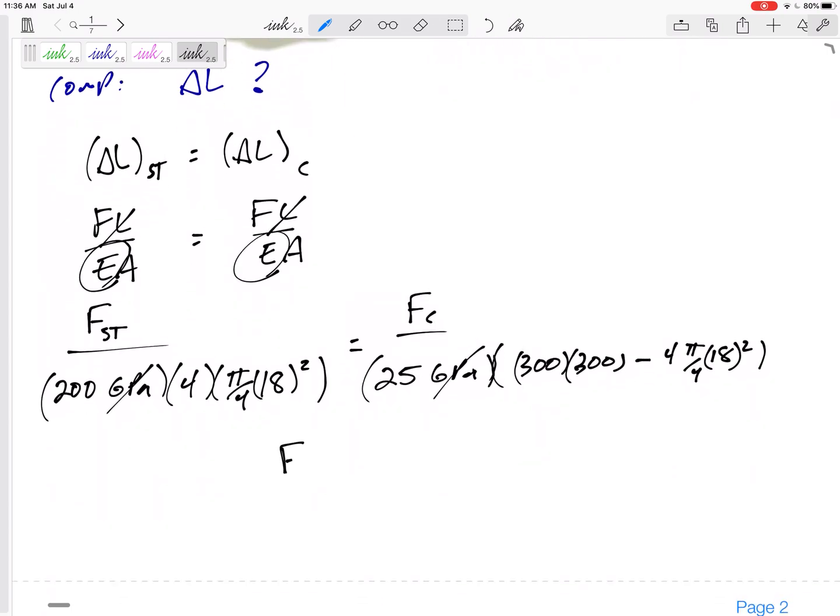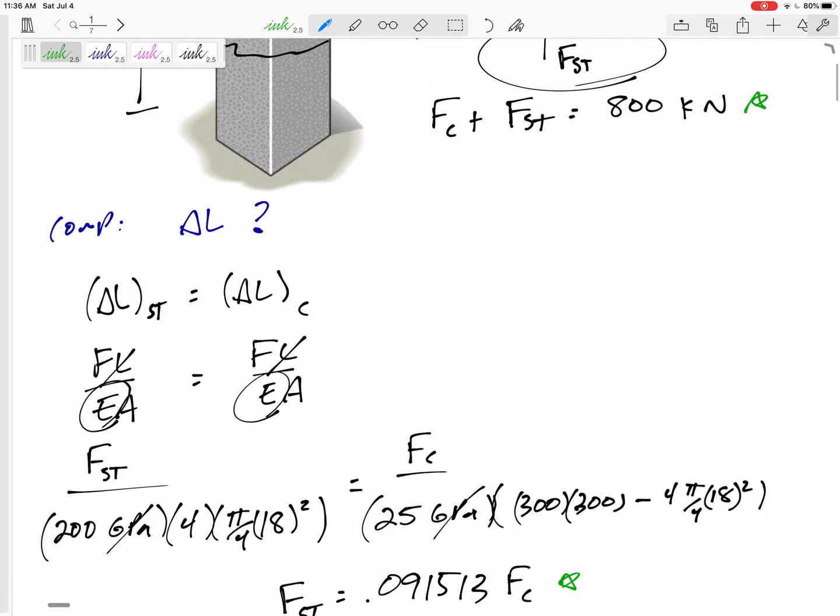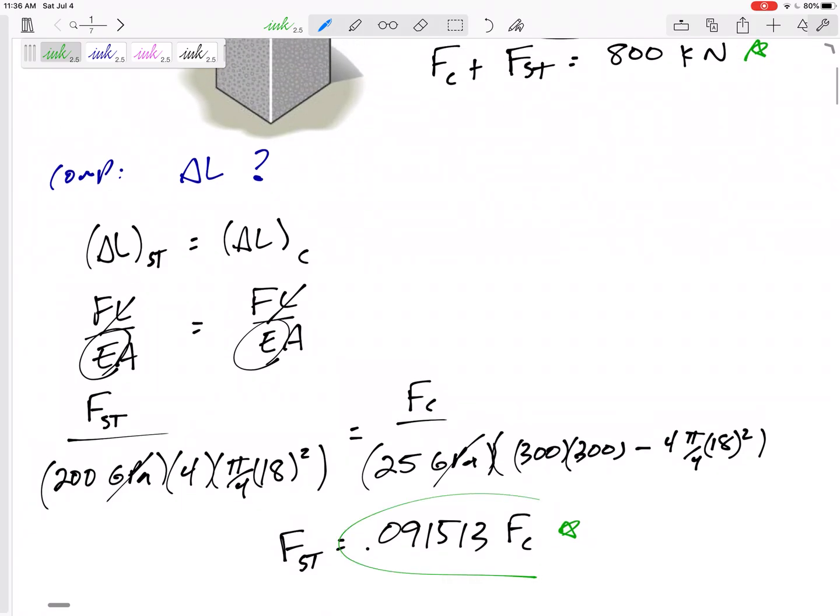So from this, I kind of like to go ahead and do as much as I can. Simplify as much as I can. I've got force in the steel is 0.091513 times force in the concrete. And so then this equation and that equation, two equations, two unknowns. Maybe put that up right there.